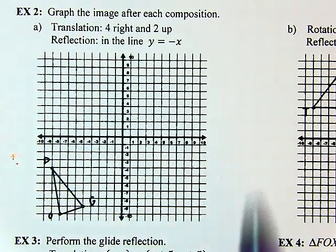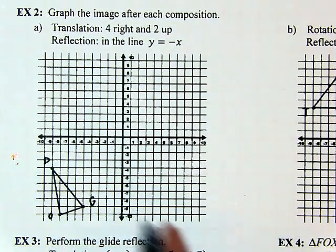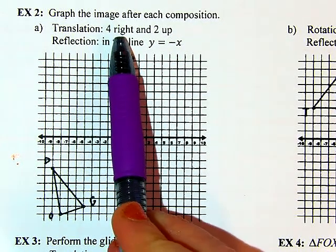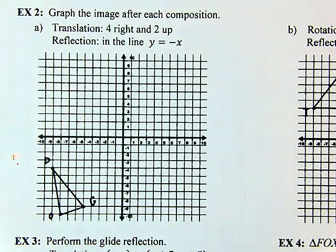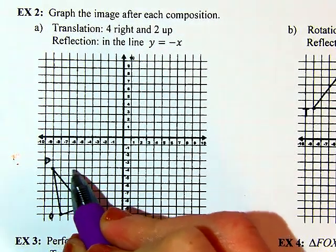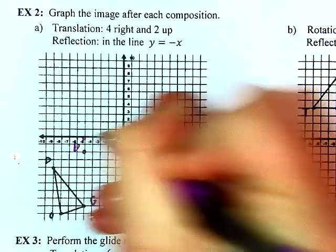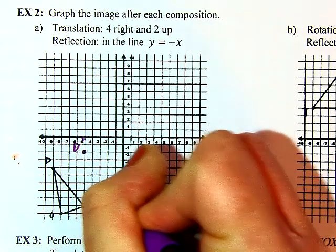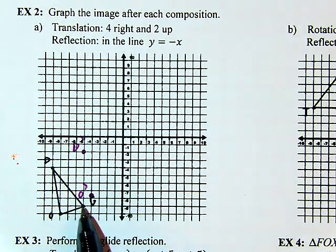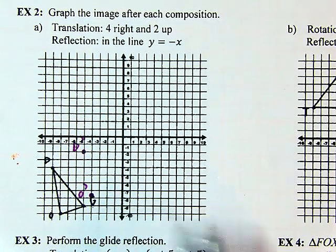A composition means we're doing back-to-back transformations. First we do a translation: four right, two up. So each point goes four right and two up. That gives us D prime, O prime, and G prime. Once you connect your dots, if your figures no longer look the same — they have to be congruent — just check to see if you plotted a point in the wrong location. Right now we're looking good; my figures still look identical.